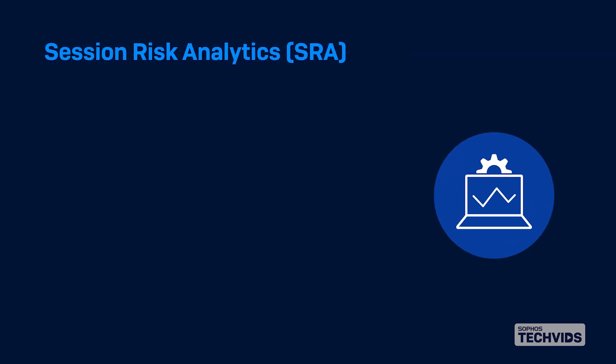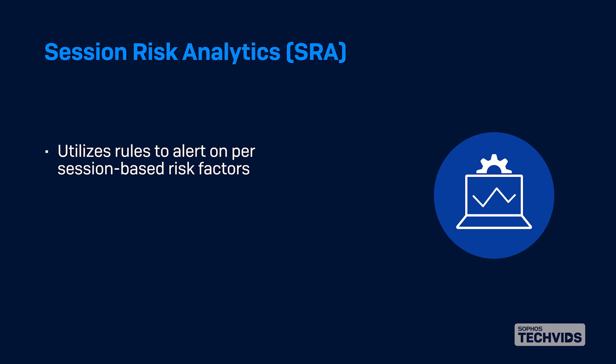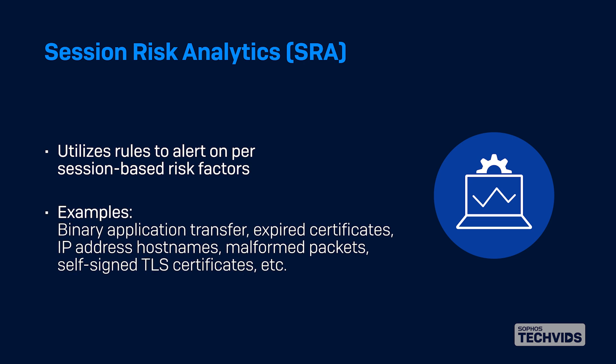Lastly, there's the session risk analytics engine, or SRA, which is a simple yet powerful logic engine. The SRA utilizes rules to alert on per-session based risk factors, which are global indicators that don't require threat intelligence to function. Some examples include binary application transfer, expired certificates, IP address host names, malformed packets, and self-signed TLS certificates.